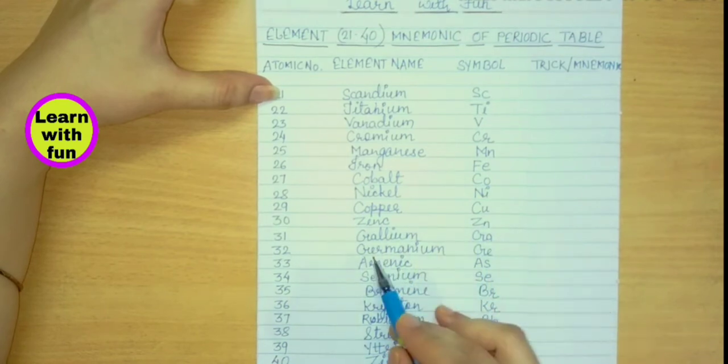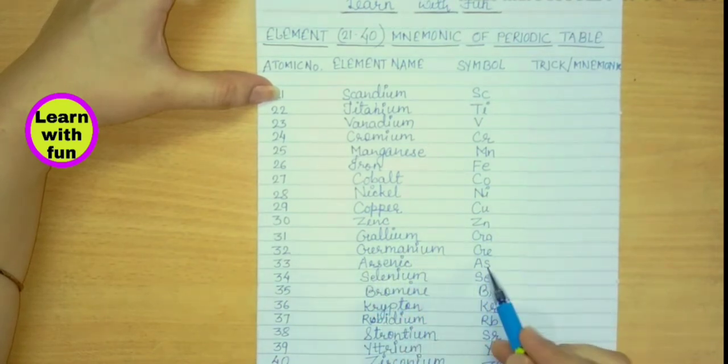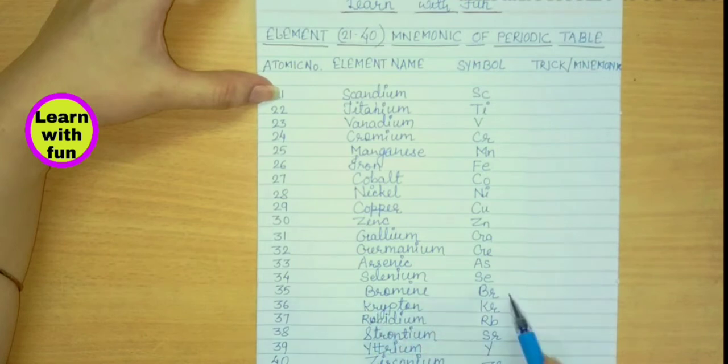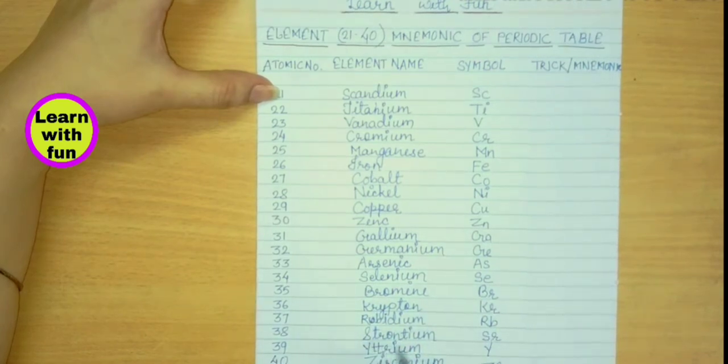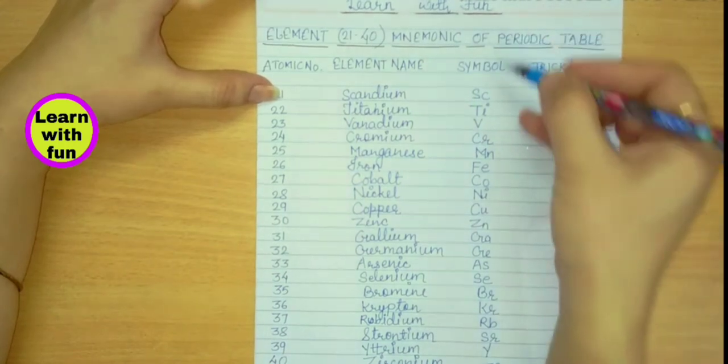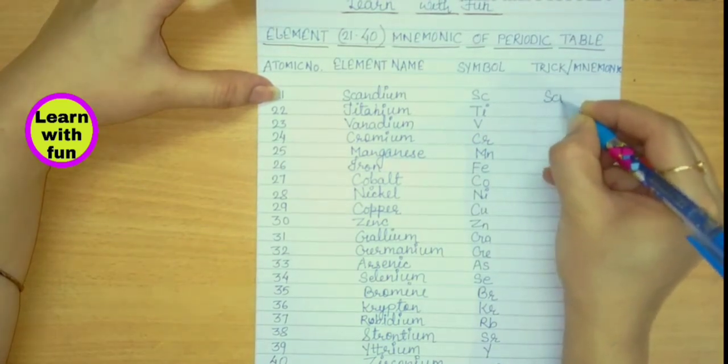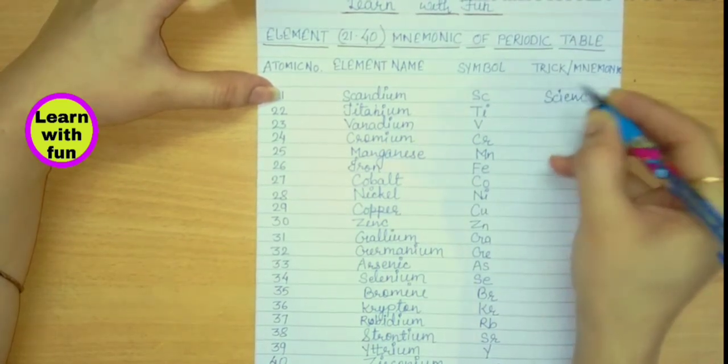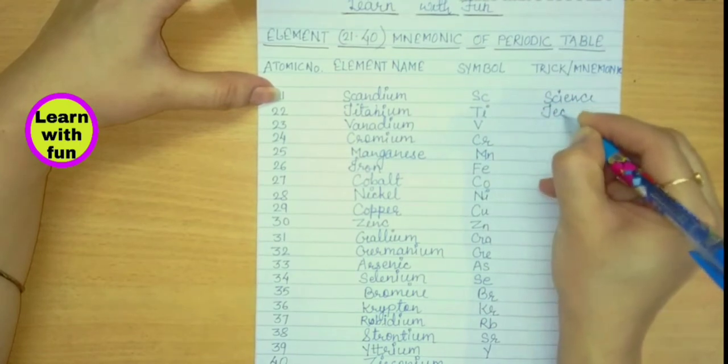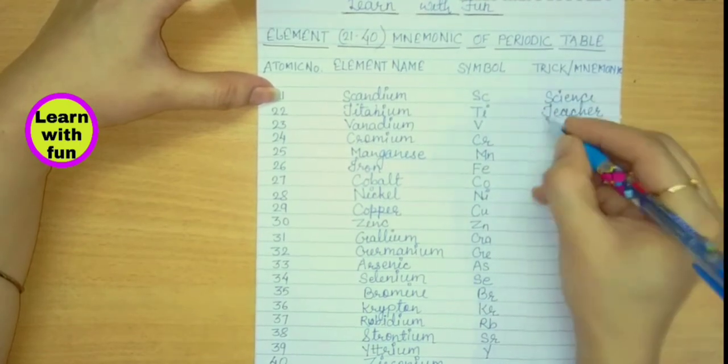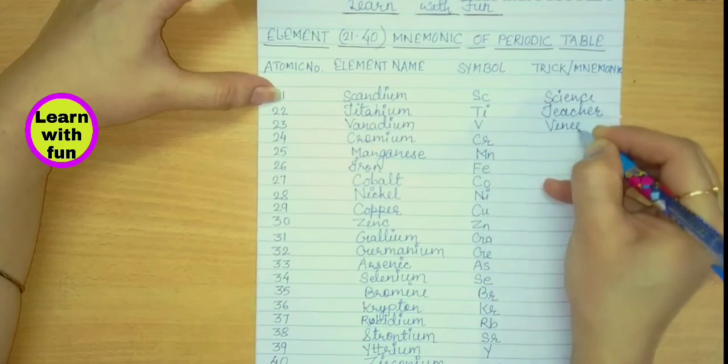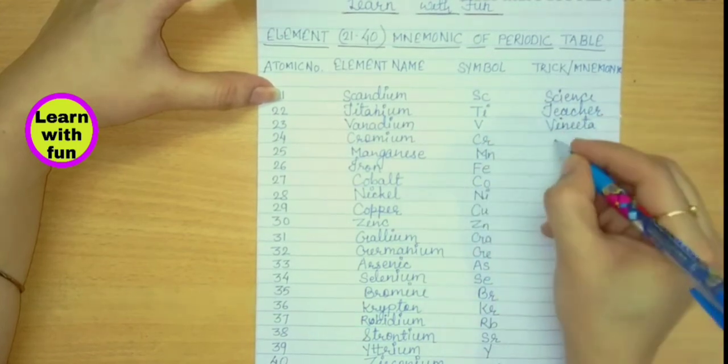Gallium Ga, Germanium Ge, Arsenic As, Selenium Se, Bromine Br, Krypton Kr, Rubidium Rb, Strontium Sr, Yttrium Y, and Zirconium Zr. So here are the symbols. Let's write the trick for it. Science teacher Vinita Kriplani, Monday Friday.